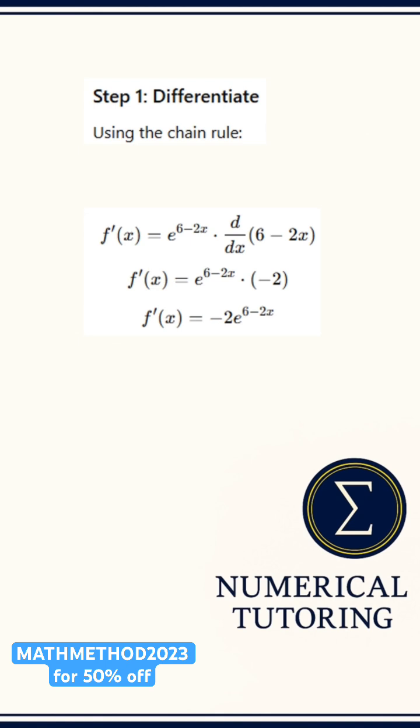So, f dash of x equals negative 2e to the power of 6 minus 2x.